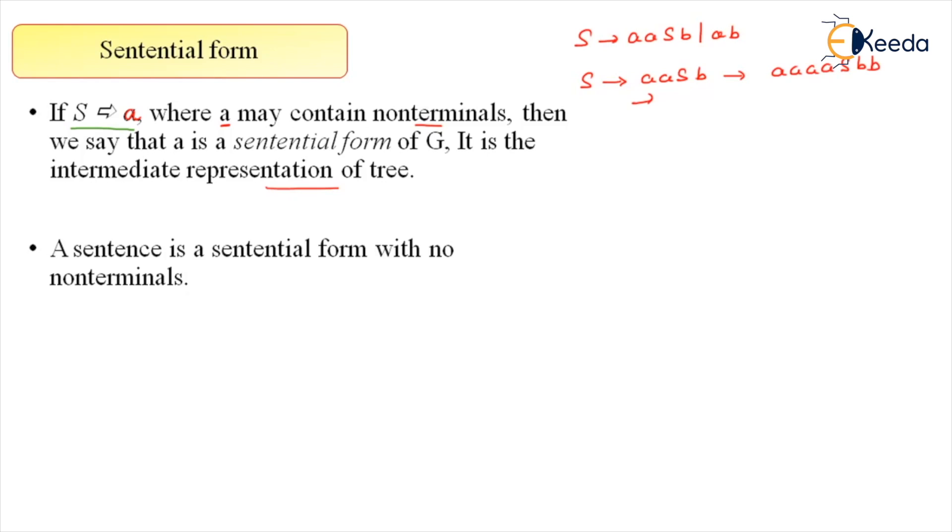Now, and finally, let's say one, two, three, four, five and triple B. So here, these all intermediate representations are known as your sentential form.